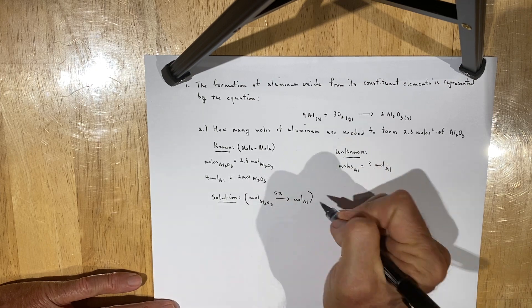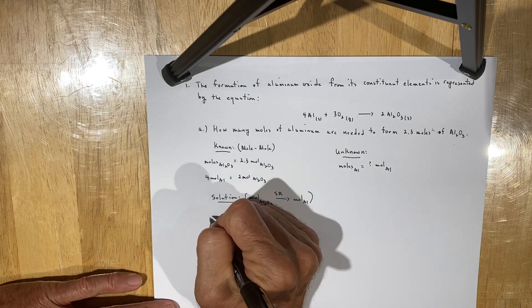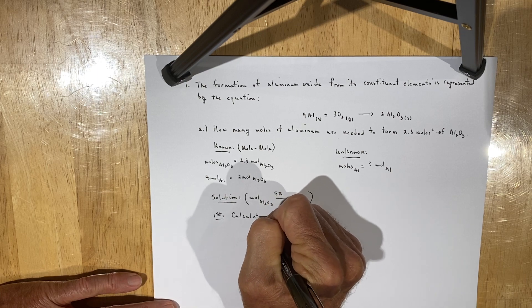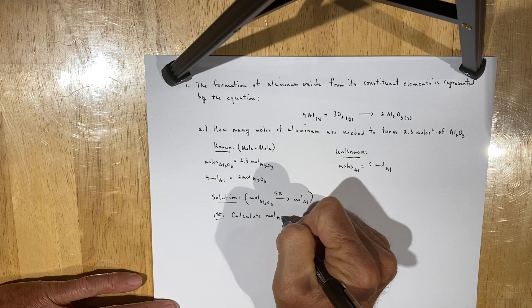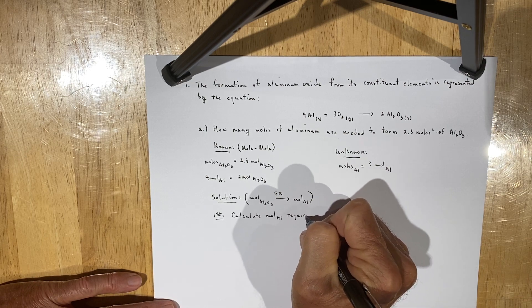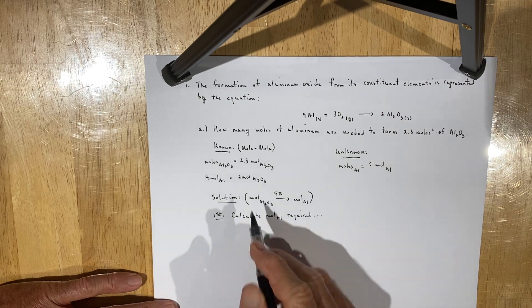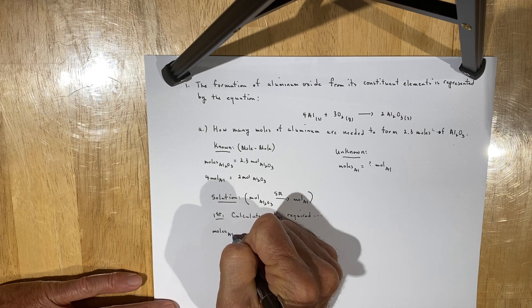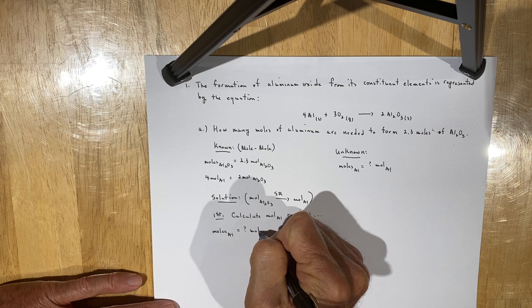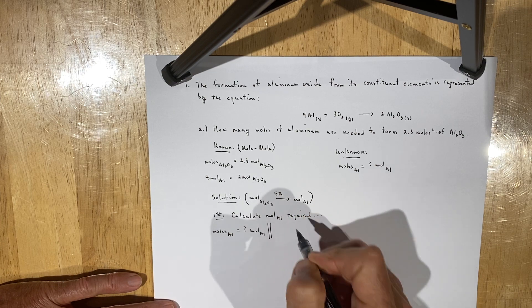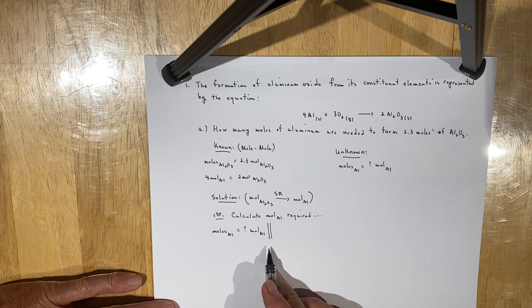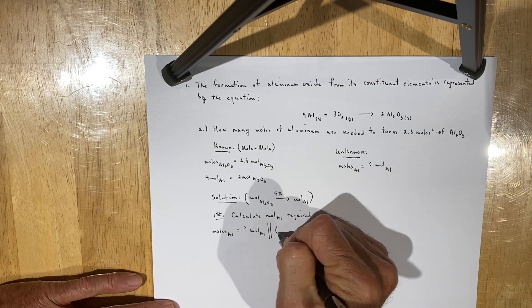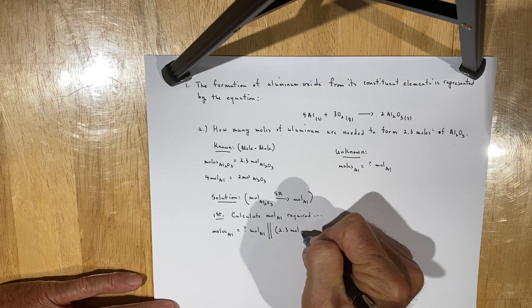That's the pathway through which we're going to solve this problem. We need to calculate the moles of aluminum required to produce 2.3 moles of aluminum oxide. We're looking for moles of aluminum in units of moles of aluminum. You always start with the pieces of information you've been given — you've been told that you need to produce 2.3 moles of aluminum oxide.